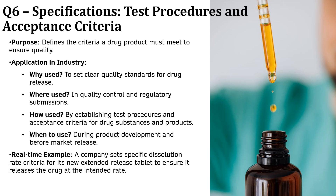ICH Q6, Specifications: Test Procedures and Acceptance Criteria for Drug Substance and Drug Products, is all about setting clear quality standards for medicines before they reach patients. Before a drug is released, it must meet strict quality criteria to ensure safety, effectiveness and consistency. Without proper specifications, there could be batch-to-batch variations affecting how well the drug works. For example, imagine a company developing a new extended-release painkiller. They set a specific dissolution rate as part of their quality specification. Before the product is approved, the company must prove every tablet dissolves at the intended rate, ensuring consistent pain relief for patients. Without ICH Q6, there would be no defined quality benchmarks and drug safety could be compromised.